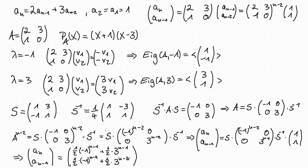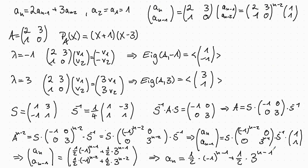A nice check that we computed everything correctly is that we see the formula for a_{n-1} is just the formula for a_n with n replaced by n-1. So our final formula for a_n is (1/2)·(-1)^{n-1} + (1/2)·3^{n-1}. In the next video we will see that not every matrix is diagonalizable, and what we can do instead.